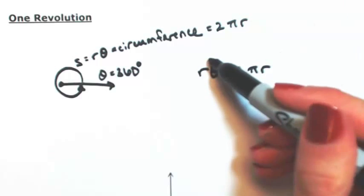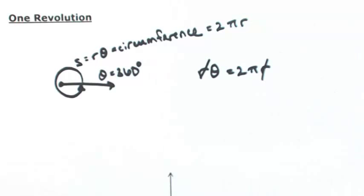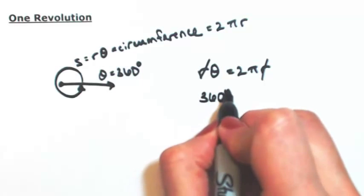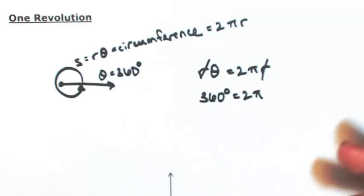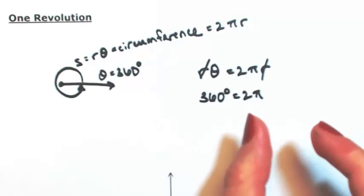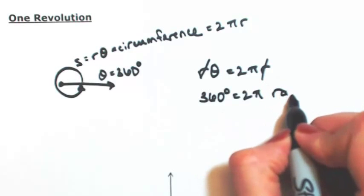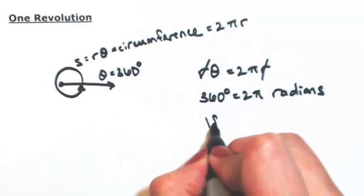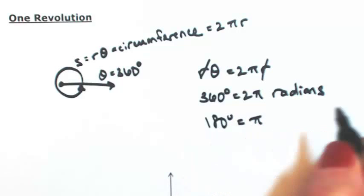So the radius is completely irrelevant. So this angle, 360 degrees, is the same thing as 2 pi. Remember if there's no unit here, in other words this is dimensionless, we assume this to be radians. If I divide by 2, that means that 180 degrees would equal pi radians.